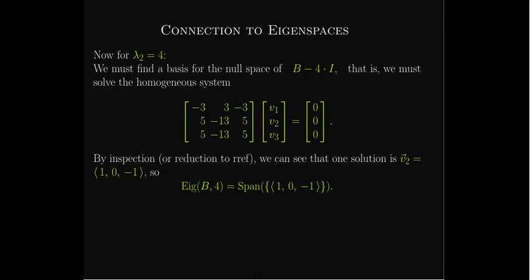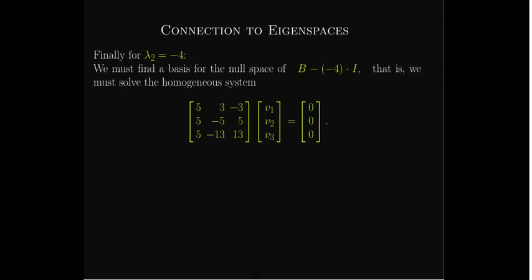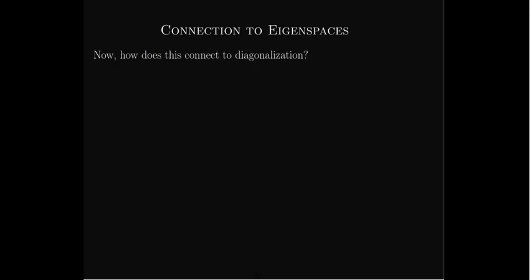And then for our last one, λ₃ equals negative 4. We're going to go ahead and solve this homogeneous system of equations. If it's not clear, we could transform it to reduced row echelon form. But here, you can see that if you add the second and third columns you get zero, so zero out the first column. So now we've got bases for all eigenspaces — three eigenvectors corresponding to different eigenspaces.